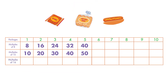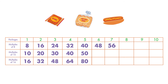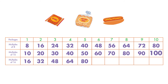Let's add a third number. Ketchup packets are sold in boxes of 16. We need 1 packet per hot dog. The first 5 multiples of 16 are 16, 32, 48, 64, and 80. None of these multiples of 16 are multiples of 8 and 10. So, keep listing multiples until there is one that is the same for all 3.